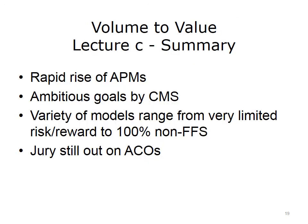This concludes Lecture C, Volume to Value. In summary, this lecture provided an understanding of some of the details and concepts that underlie alternative payment models in Category 3 and 4 of the HHS payment taxonomy. These alternative payment models, especially through ACO models, are catching on quickly for both CMS and private sector programs. CMS has ambitious goals, and a variety of models range from very limited risk and reward to 100% non-fee-for-service. It is not yet clear whether accountable care organizations will have a significant effect on bending the cost curve.